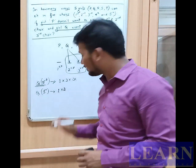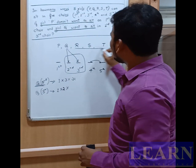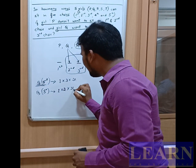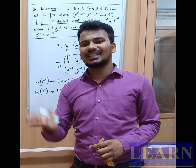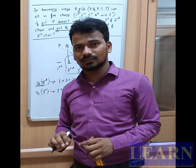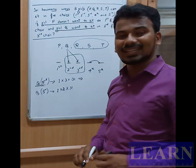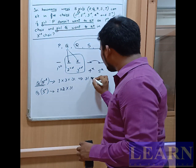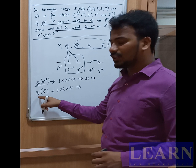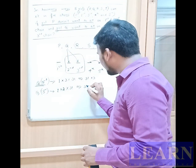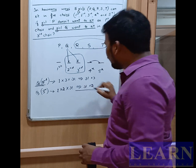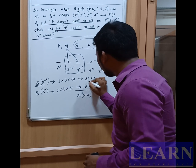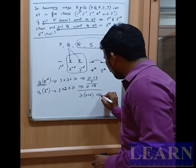With Q and P placed, the three remaining people R, S, and T can sit in any of the three remaining places, which can be arranged in 3! ways. So Case 2 gives 3! × 2. Combining both cases: 3! × 3 + 3! × 2 = 3! × 5.